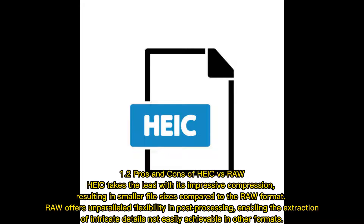Section 1.2 Pros and cons of HEIF vs. RAW. HEIF takes the lead with its impressive compression, resulting in smaller file sizes compared to the RAW format. RAW offers unparalleled flexibility in post-processing, enabling the extraction of intricate details not easily achievable in other formats.